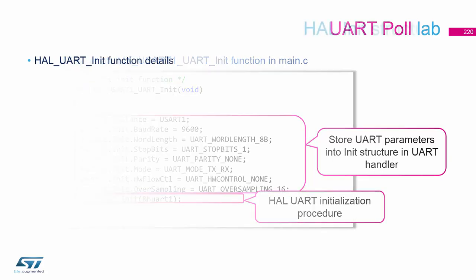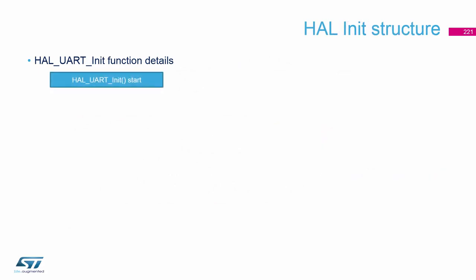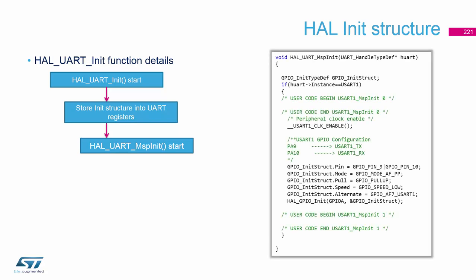We init the UART. During initialization, the UART stores the init structure into registers, but we also call the callback from the MSP init. In the msp.c file, we initialize the related peripheries, which are the GPIO pins, and we also enable the clocks.